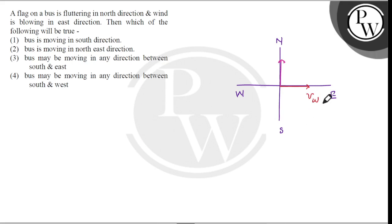This is velocity of wind with respect to ground. And here, velocity of wind with respect to bus. Velocity of wind with respect to bus equals velocity of wind with respect to ground minus velocity of bus with respect to ground. Or, velocity of wind minus velocity of bus.